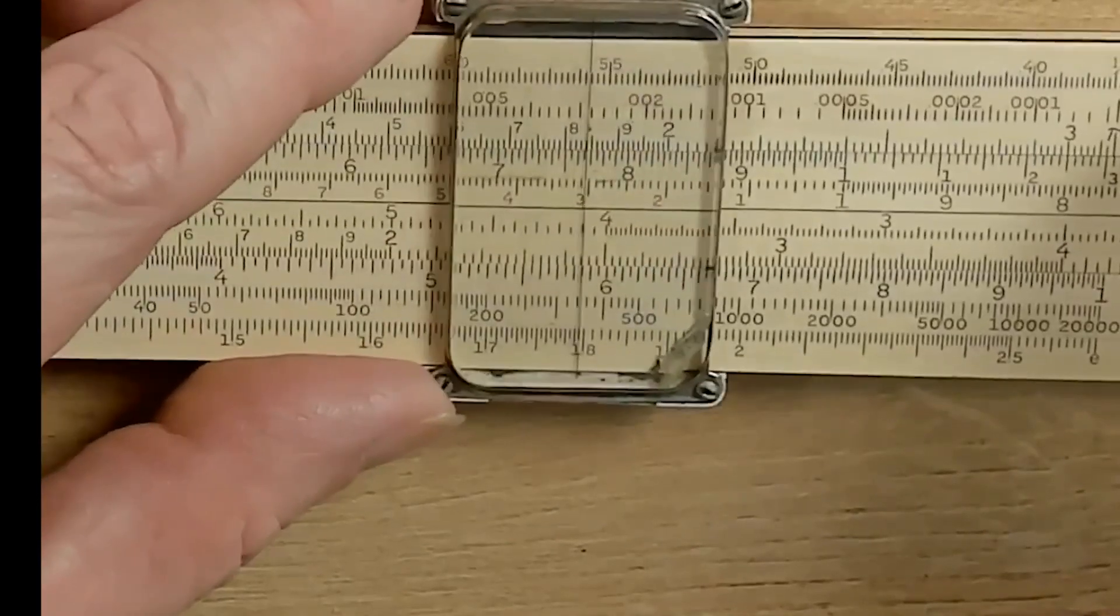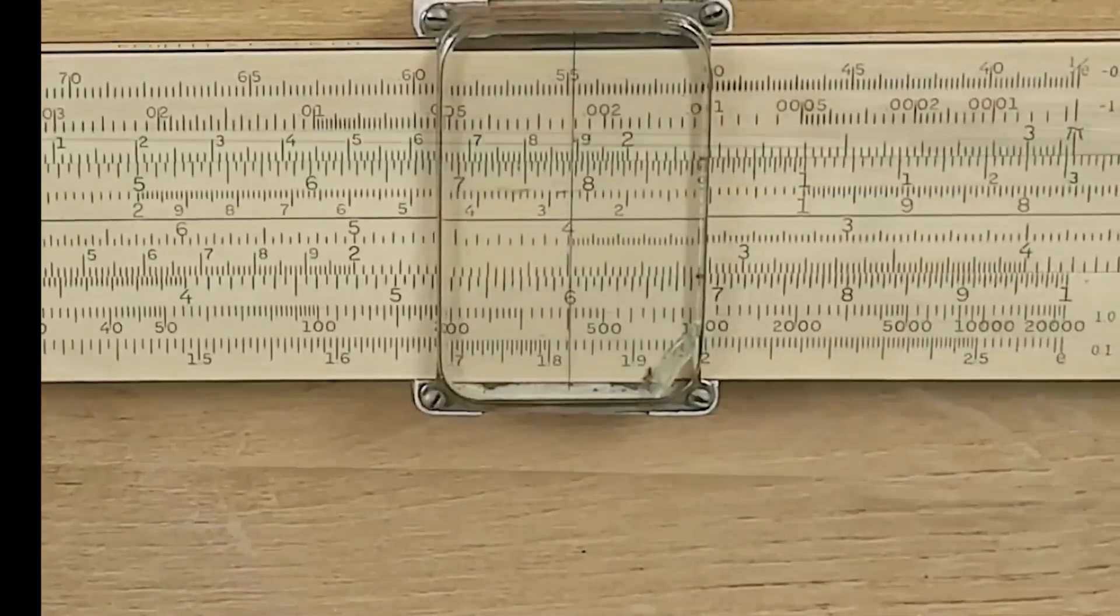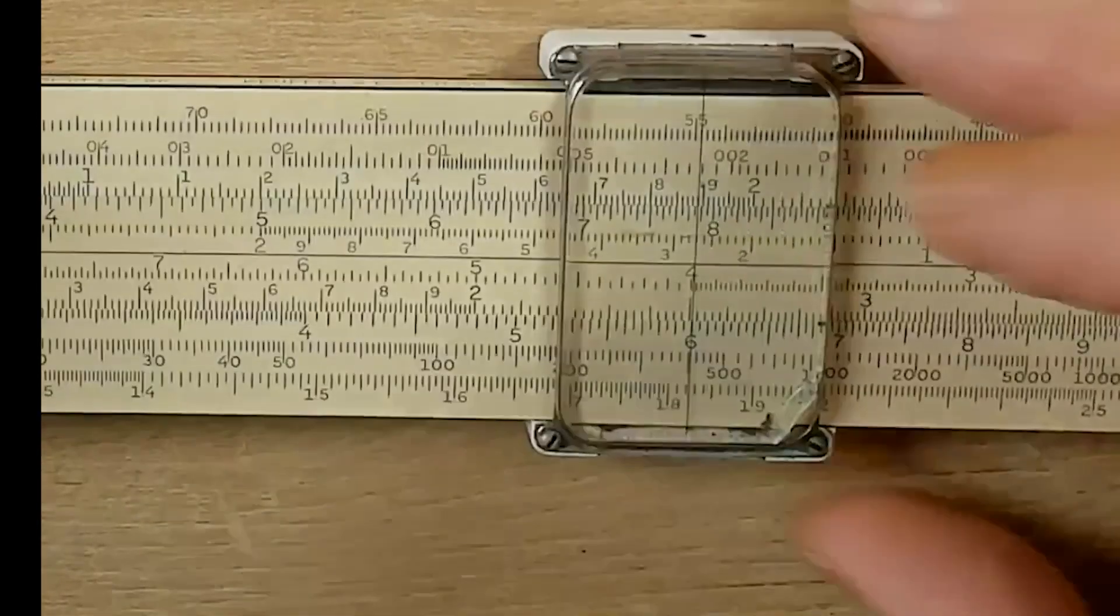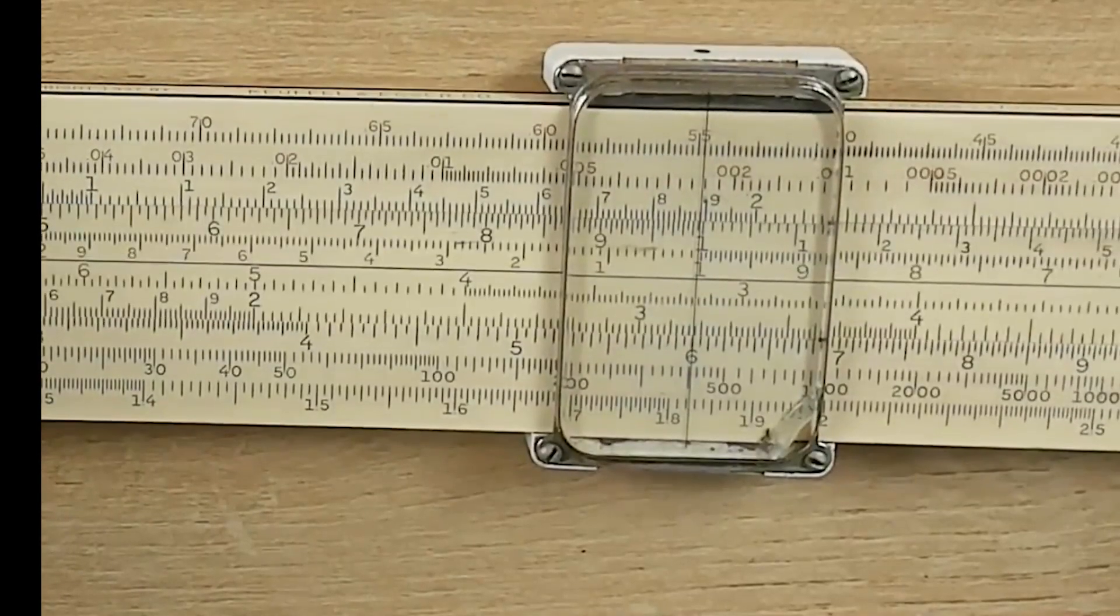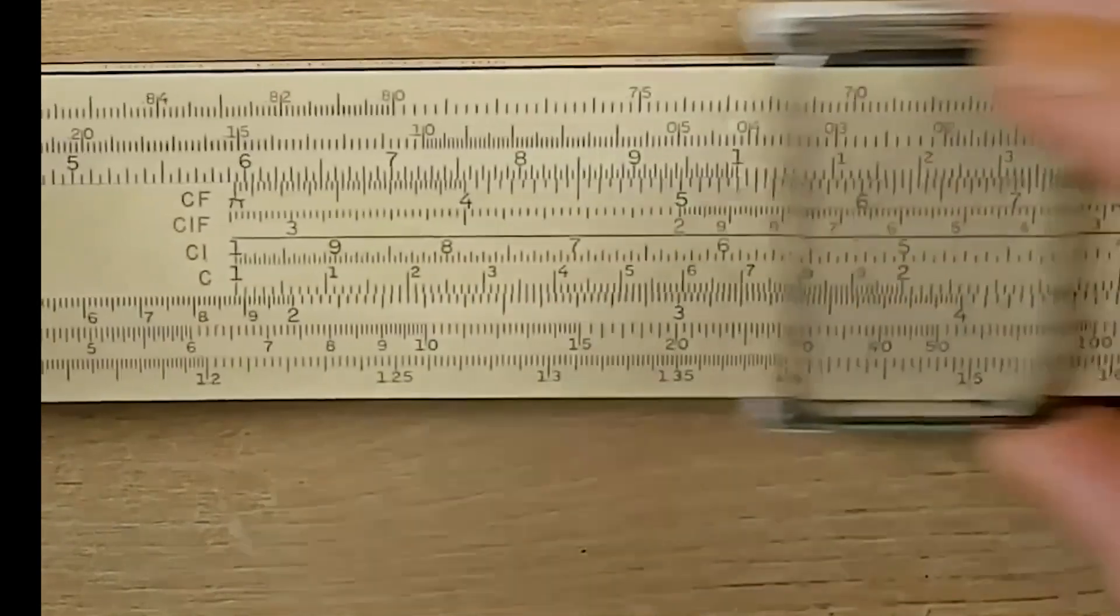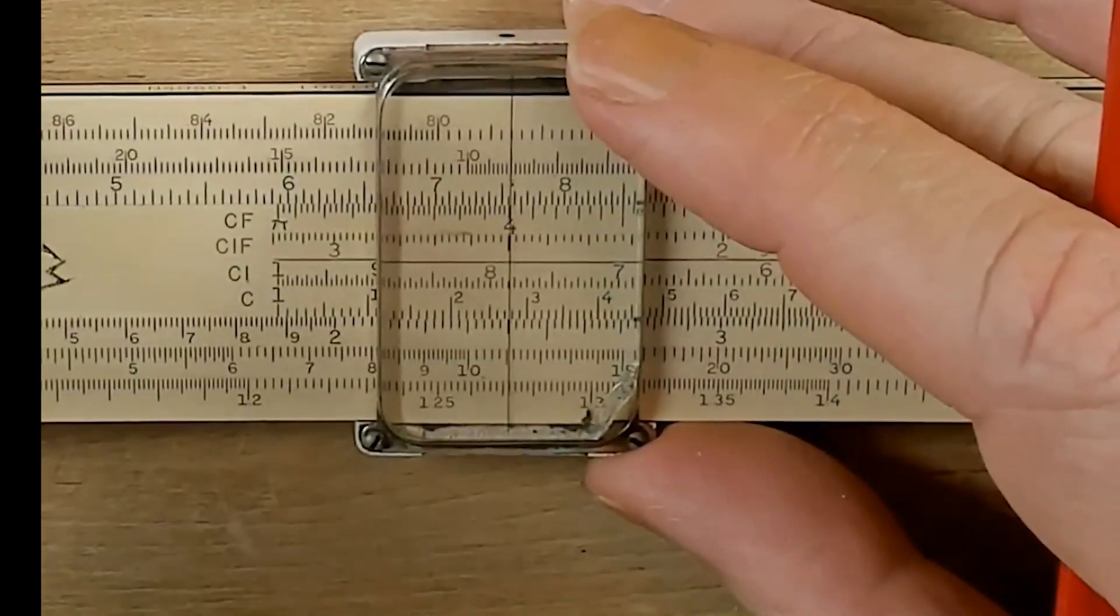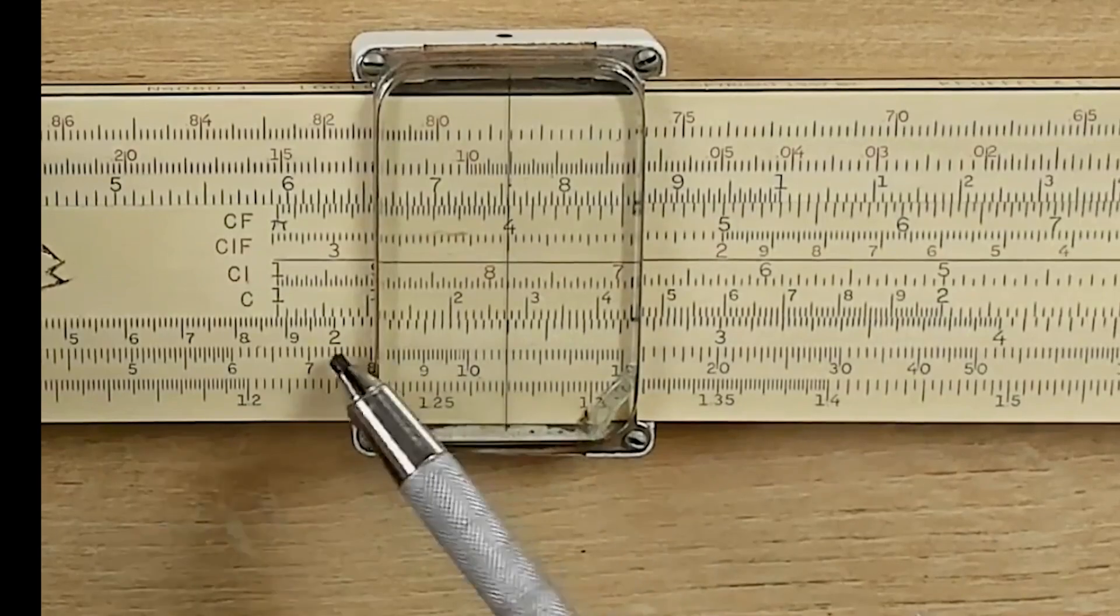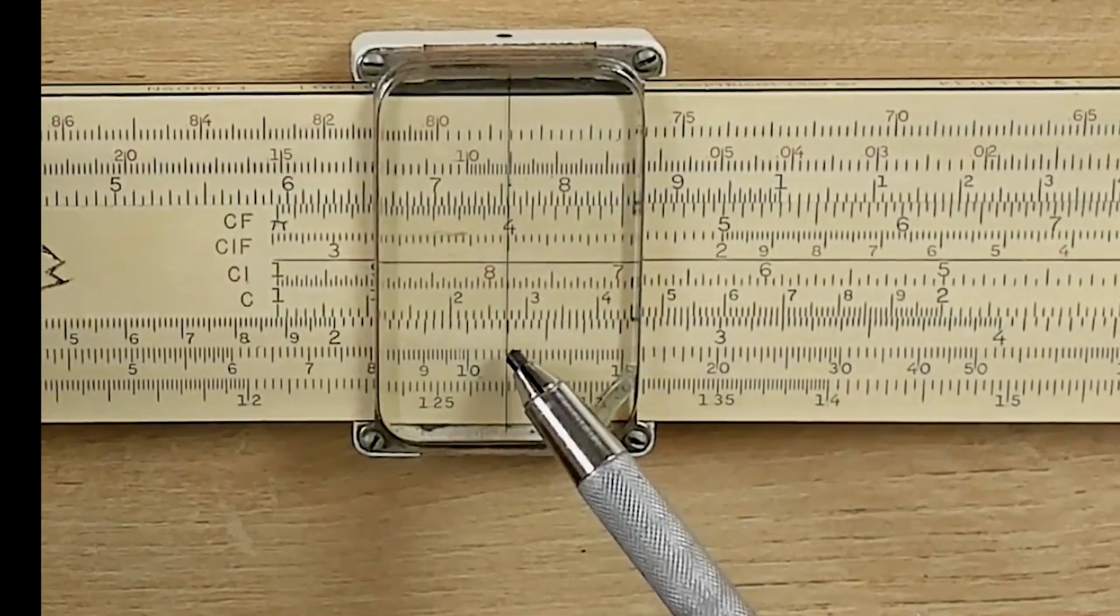Now, the other way that we can do it is using these folded scales. So, we'll go out here to the 6, and we'll go up to the CF scale, and put the index of the CF scale directly over the 6. Then, all we have to do is read back to the 4 on the CF scale, and straight down. Here's our 2, here's our 2.5, there's 2.4 again.